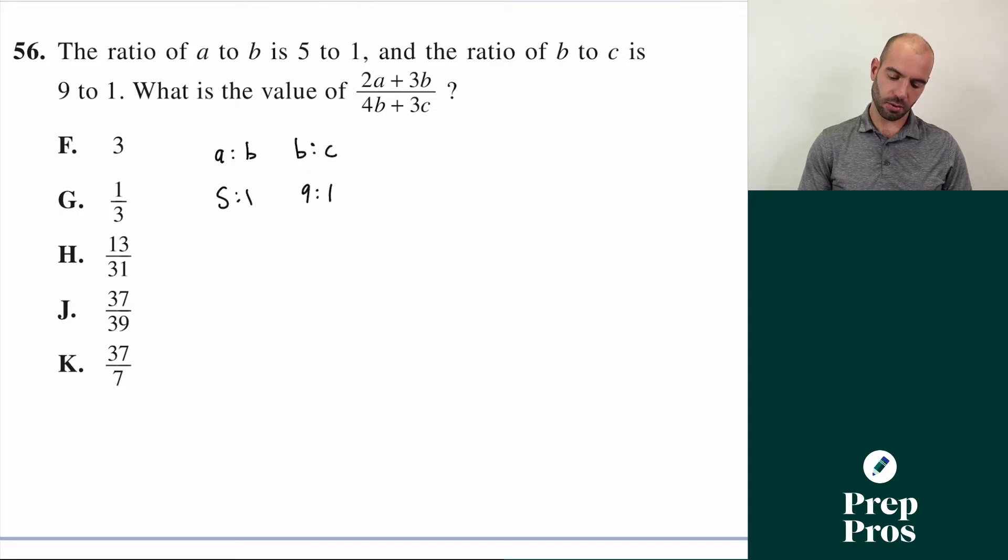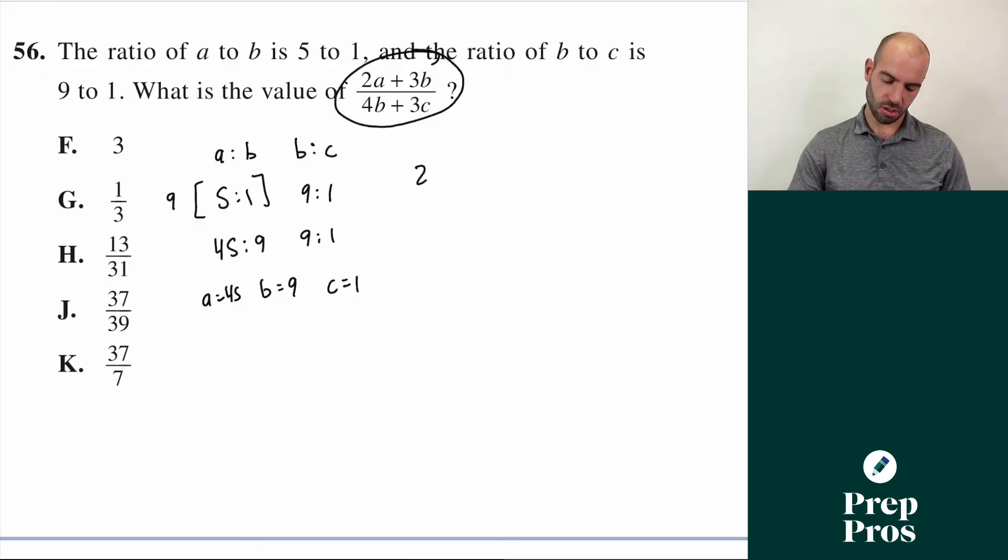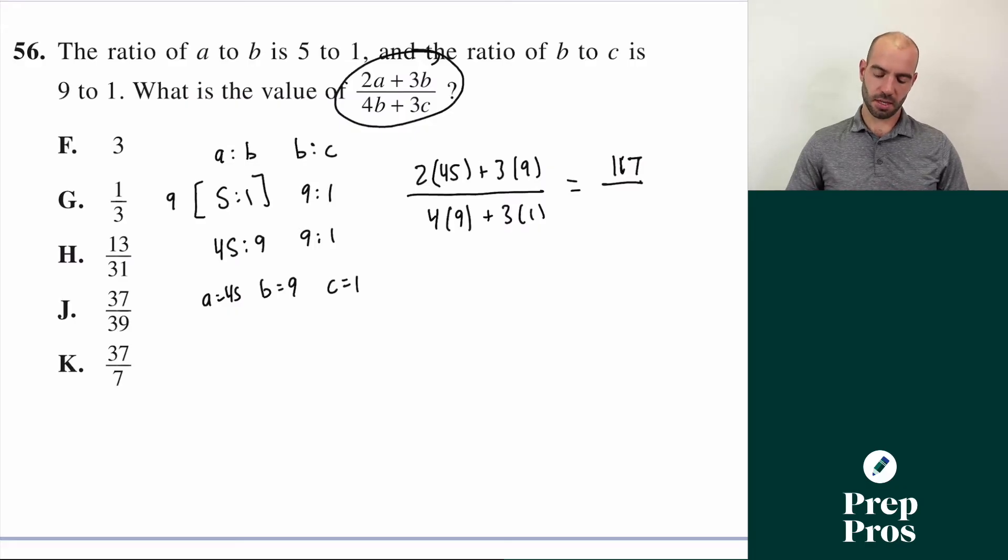Currently I have five to one, and then I have nine to one. What I want to do is make the B values the same. So I can multiply this whole ratio by nine. So I can write this as 45 to nine, and nine to one. Now, what I can do is since the middle values match, I can compare across ratios. So I can just say A is 45, B is nine, and C is one. Now that I have values, I can just plug them in to my equation and solve. So it's gonna be two times 45 plus three times nine divided by four times nine plus three times one. Two times 45 is 90 plus three times 27 is 117, and four times nine is 36 plus three is 39. You do 117 divided by 39, it turns out that equals three. So our answer here is A.